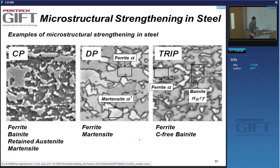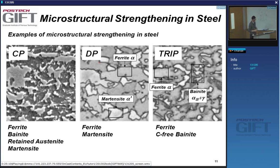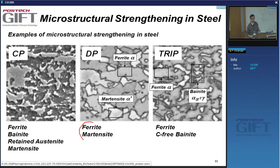In recent years, there's been a flurry of interest in these materials with lots of new ideas. Currently being produced in industry: complex phase steels, DP steels, and TRIP steels. Complex phase steel is probably the most complex — it contains ferrite, bainite, retained austenite, and martensite all together. Today we'll talk mainly about ferrite-martensite dual phase steels and low carbon TRIP steels.